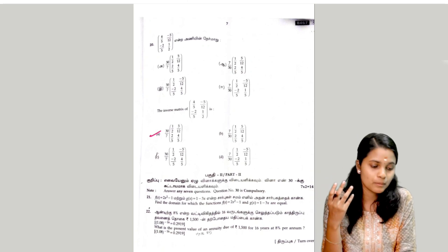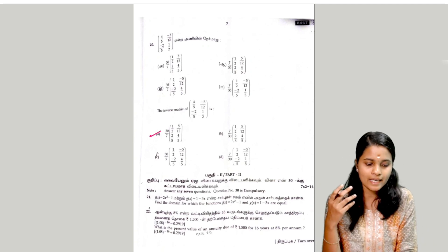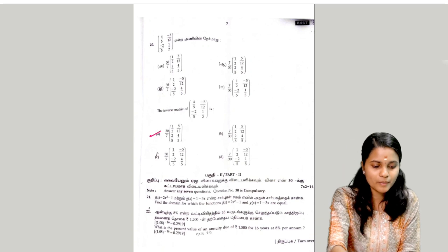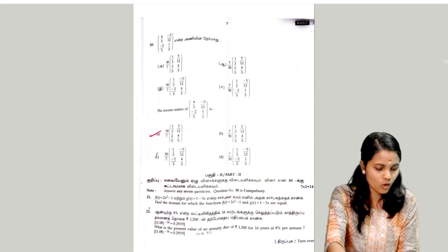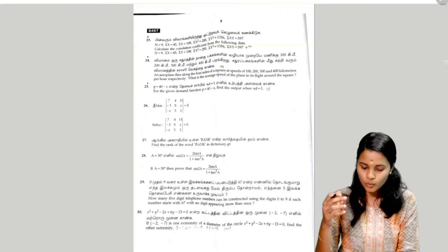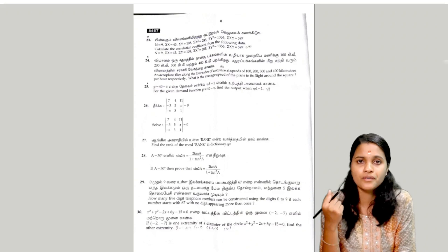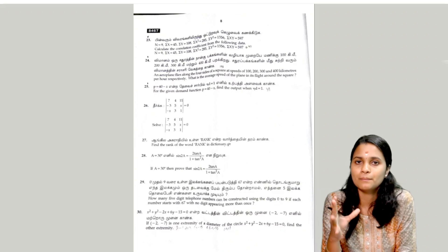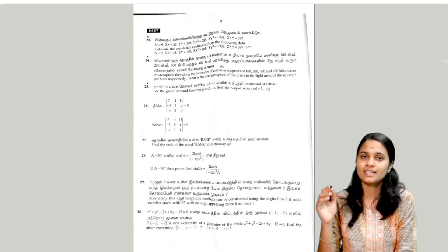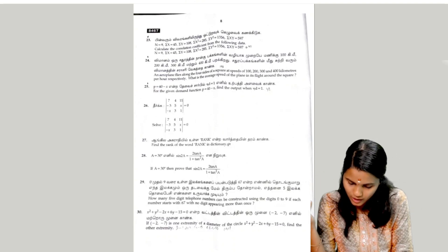The next question is the present value of annuity — find the maximum example problems. We will find the full marks working through the exercise. The next question is the 23rd question: find the correlation coefficient — just follow the formula, apply it, and substitute the values. The next question: an aeroplane flies along the four sides of a square.